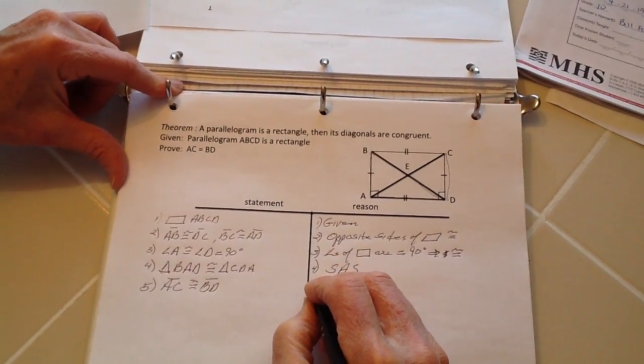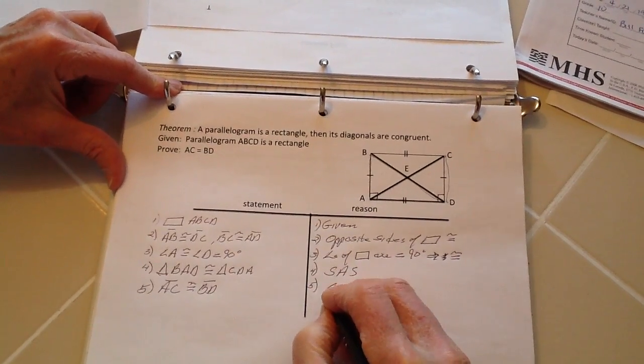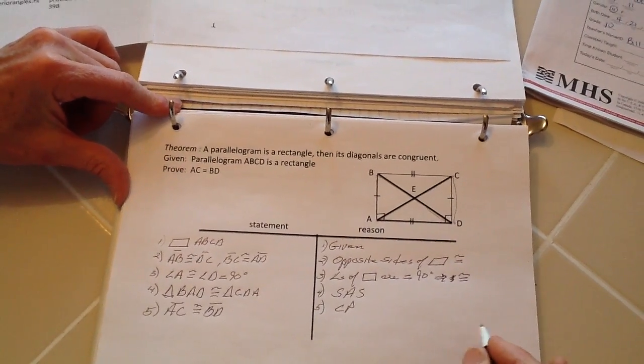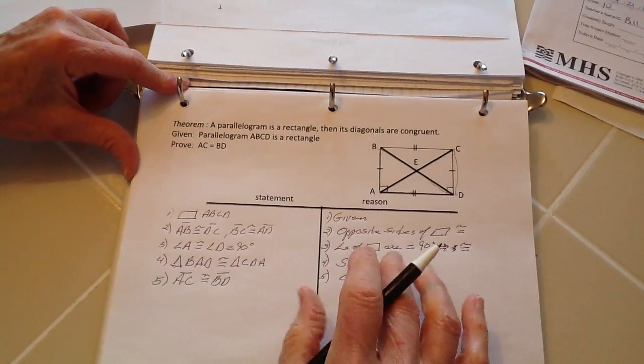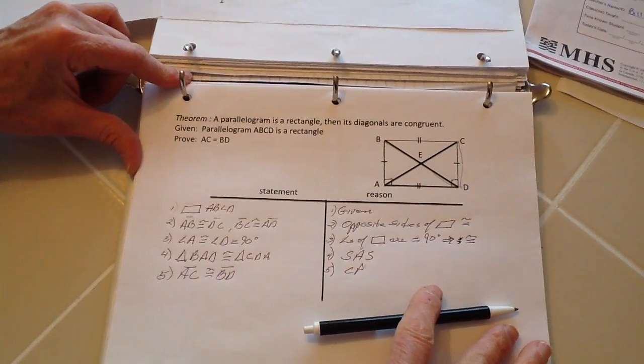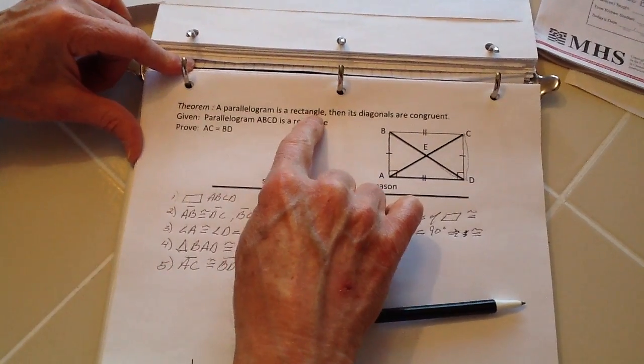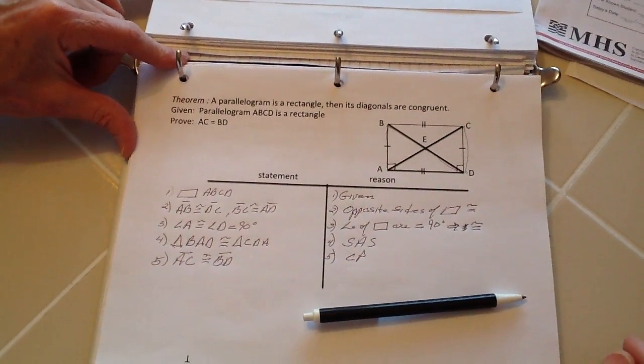And that is because of five: corresponding parts of congruent triangles. So we have then completed this proof of the theorem that if a parallelogram is a rectangle, then its diagonals are congruent. Thank you.